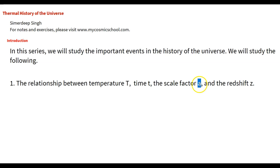Once we know how temperature T is related to the scale factor A, we know how T is related to time and to redshift. As we have seen in the standard model, the relationship between temperature and scale factor is A·T = constant. In this lecture series, we will see that this is an approximation which holds well, but if we want a more accurate expression, that expression is something else, and we will derive it.